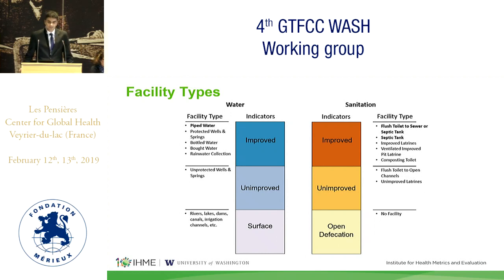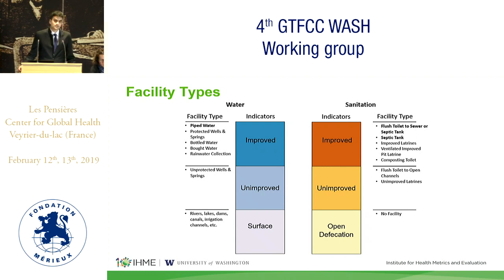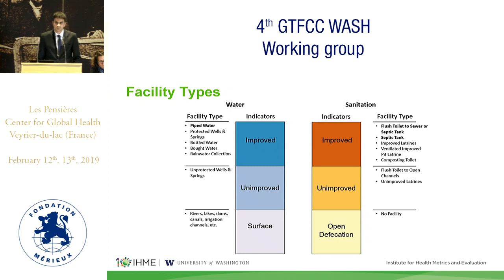As indicated in the first working group, these are the JMP indicators of facility types: improved, unimproved, and surface water, and then improved, unimproved, and open defecation. We have received healthy criticism that these indicators are quite broad, especially for improved — for example, comparing flush toilets versus improved latrines, or improved wells versus a piped water supply. So we decided to not only model access to improved facilities at large, but use that as an envelope and then subset specifically the proportion of population with access to piped water supply and to a sewered or septic tank system, similar to how JMP has done in their latest 2017 results.